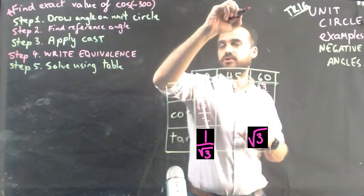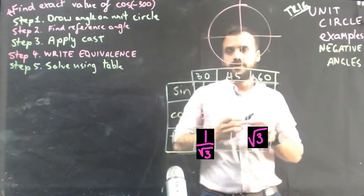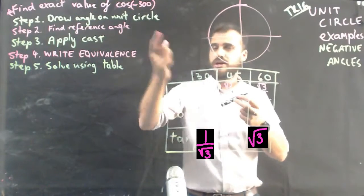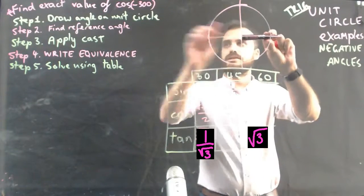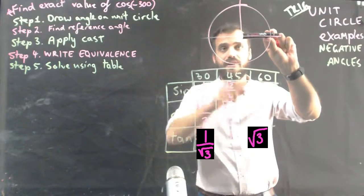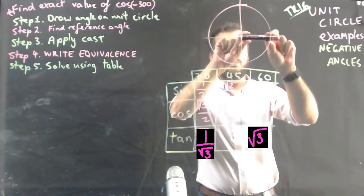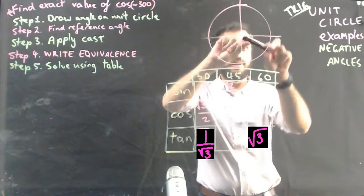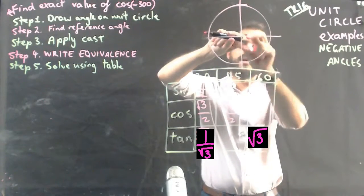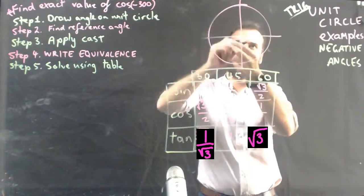It's pretty straightforward. It's this first step that changes: draw the angle on the unit circle. Because it's negative 300 degrees, it's a negative angle. You're not moving this way — that's a positive angle. You're moving this way — it's a negative angle. So, negative 90, negative 180, negative 270, 300.